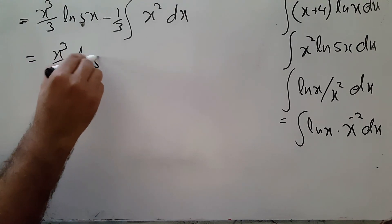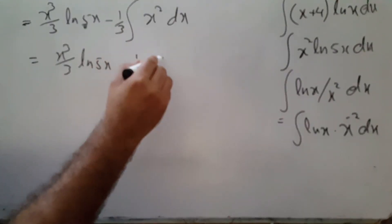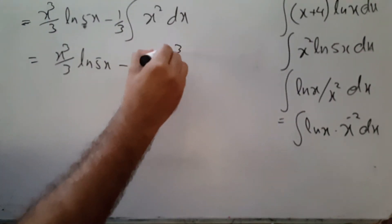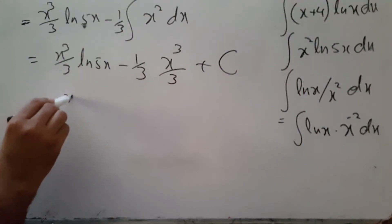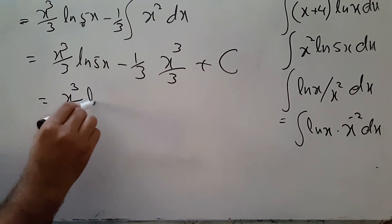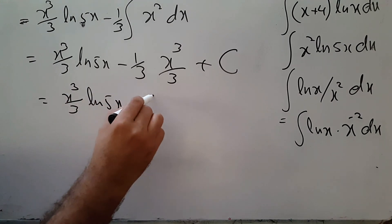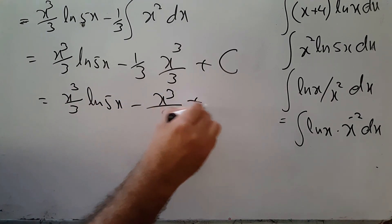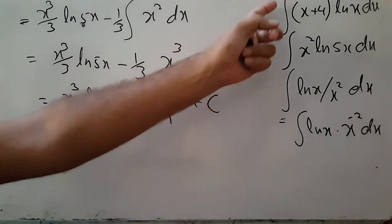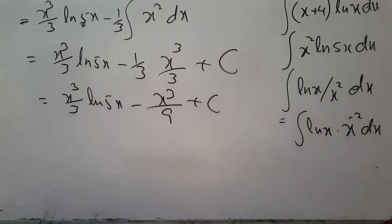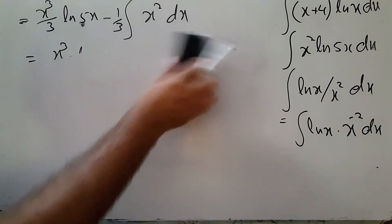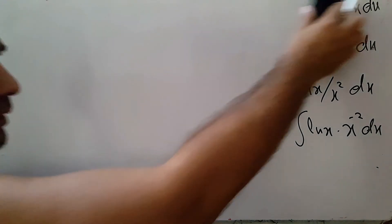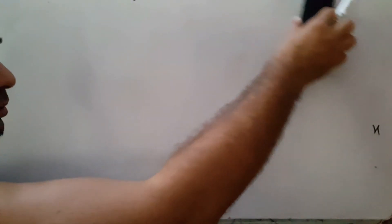This gives x cubed over 3 times natural log of 5x minus 1 over 3. Integration of x cubed over 3 gives x cubed over 9, plus capital C. Final answer: x cubed over 3 times natural log of 5x minus x cubed over 9 plus C. These are the questions involving natural log with integration by parts.